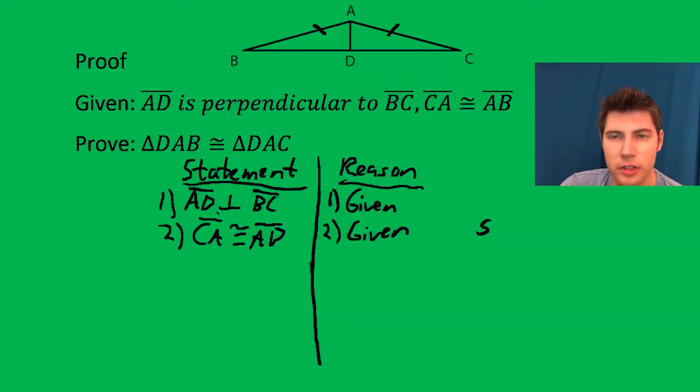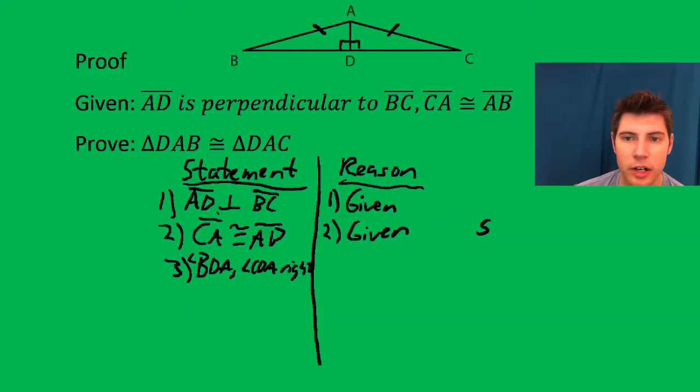So now step three, I'm going to look at step one and ask, what is it telling me that's going to help me out here? Well, that is that the two angles are right. And then in the diagram, I can label it.